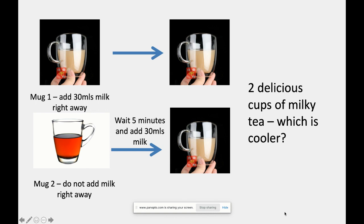This often blows students' minds because it seems counterintuitive — you might associate adding cold milk straight away with producing the colder tea, but actually it's cooler when you wait. This is the idea of the temperature gradient, and it's postulated to be a threshold concept because once you've learned this, it changes the way you think and practice within your discipline. For instance, if you were in culinary arts, this would change the order in which you put ingredients together.